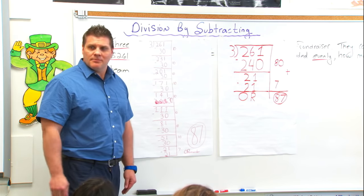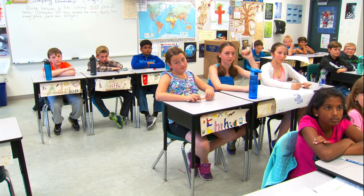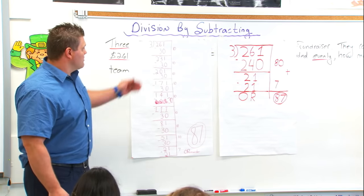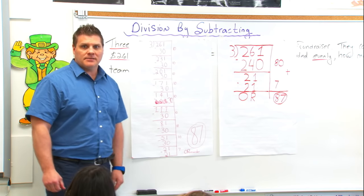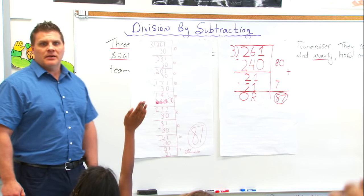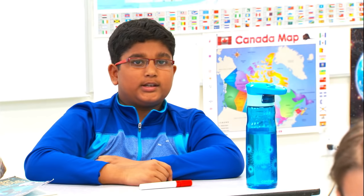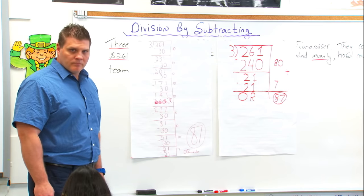Who can tell me some similarities between these two solutions? Caitlin? They both add up on the side — they both put their numbers to the side and then added them up in the end. Excellent. Alan? Macy used 8 tens and Griffin used 1 eighty, and they're both equal.